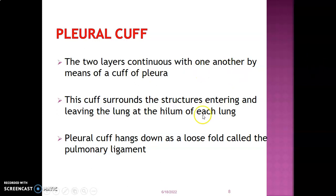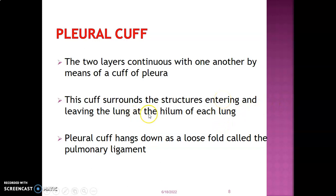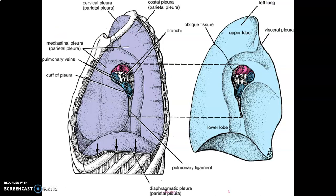This pleural cuff surrounds the structures that are entering the lung at the hilum. The continuity between the parietal and visceral pleura forms a cuff of pleura that surrounds the structures entering and leaving the lung at the hilum. The pleural cuff usually hangs downward as a loose fold called the pulmonary ligament. You can see the cuff of pleura surrounding these hilar structures in the diagram.